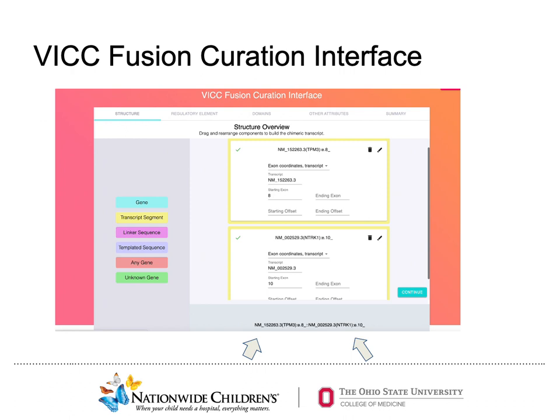Here is an example use case for the VIC fusion creation interface, depicting the representation of a TPM3 and TRAK1 fusion event. This interface leverages the Fuser class, allowing users to convert fusion event observations to a format consistent with the framework previously described, as you can see with the arrows below. Users can follow the various tabs on the top to add features as necessary, and the summary tab reports the fusion in accordance with the guidelines described. This output can also be converted to a JSON machine-readable format, allowing for information describing the fusion to be directly accessed by the user.